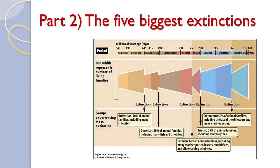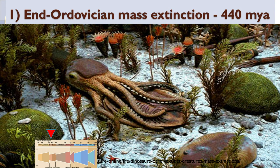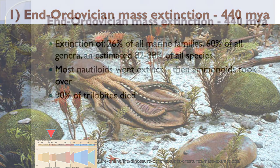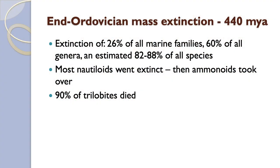There are five mass extinctions: one at the end of the Ordovician, one at the end of the Devonian period, the big one at the end of the Permian, then at the end of the Triassic, and more famously the end of the Cretaceous when the dinosaurs died. The first one, about 440 million years ago at the end of the Ordovician, shows an ammonoid eating a trilobite, as an example of predator-prey relationships common in early seas. That mass extinction led to the demise of 26% of all marine families, about 60% of genera, and upwards of 80-88% of all animal species. Most of the nautiloids went extinct, and a lot of the trilobites died out as well.